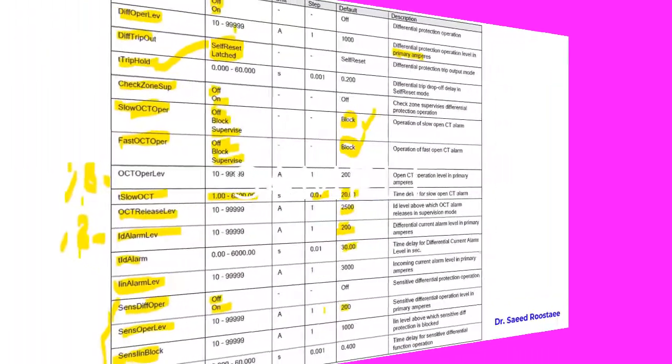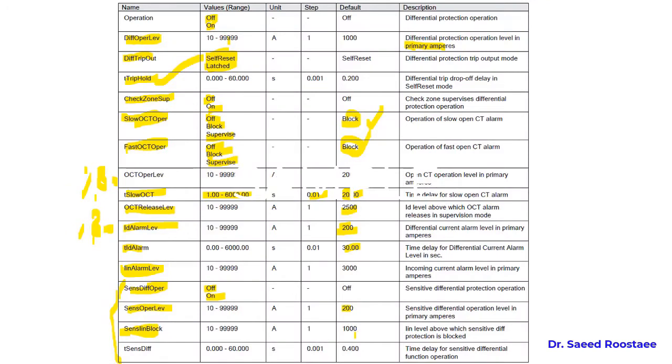The level at which the sensitive differential algorithm is automatically blocked. Here also we should set the value in primary ampere. T sensitive diff is the time delay for the sensitive differential function operation.